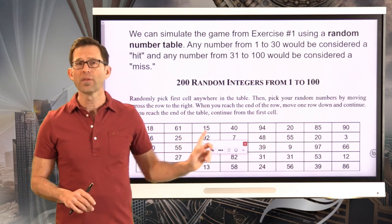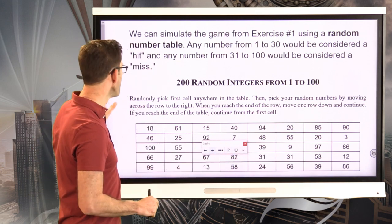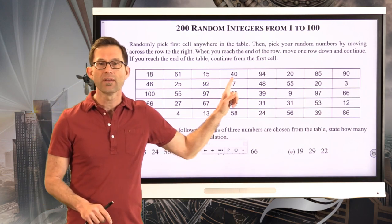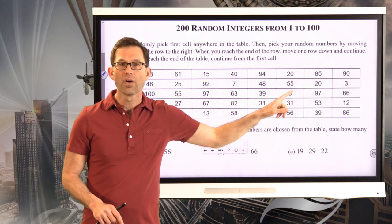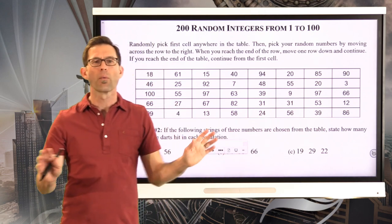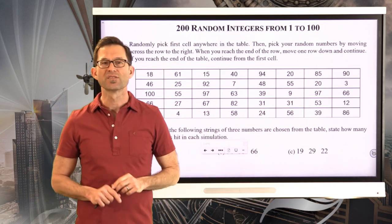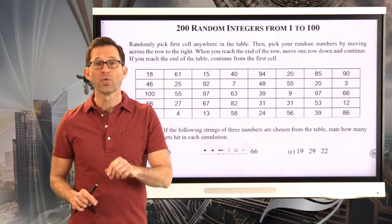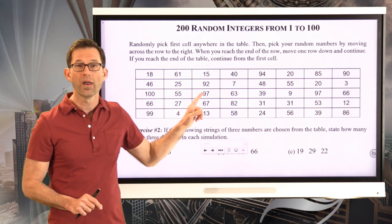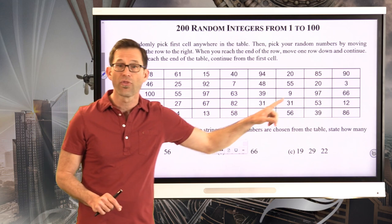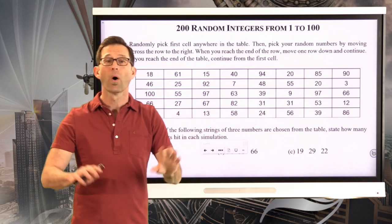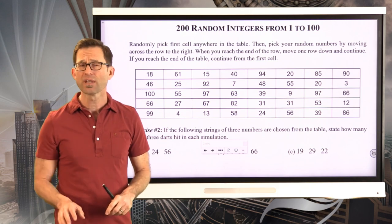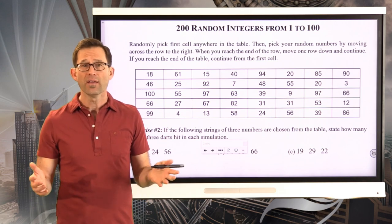So we're just going to say that any number in this table - so I have a part of the table sitting here. Any number in the table like 7 or 9 or 12, any number from 1 to 30 is considered a hit. We hit it. And any number from 31 to 100, you know, so 61, 97, 67, 31, 53, all of those should be considered a miss. And make sure you understand this. It's a very simple idea. The idea is, if I've got 100 total numbers and my chance is 30% that any one dart would hit, then any number from 1 to 30 represents a hit.